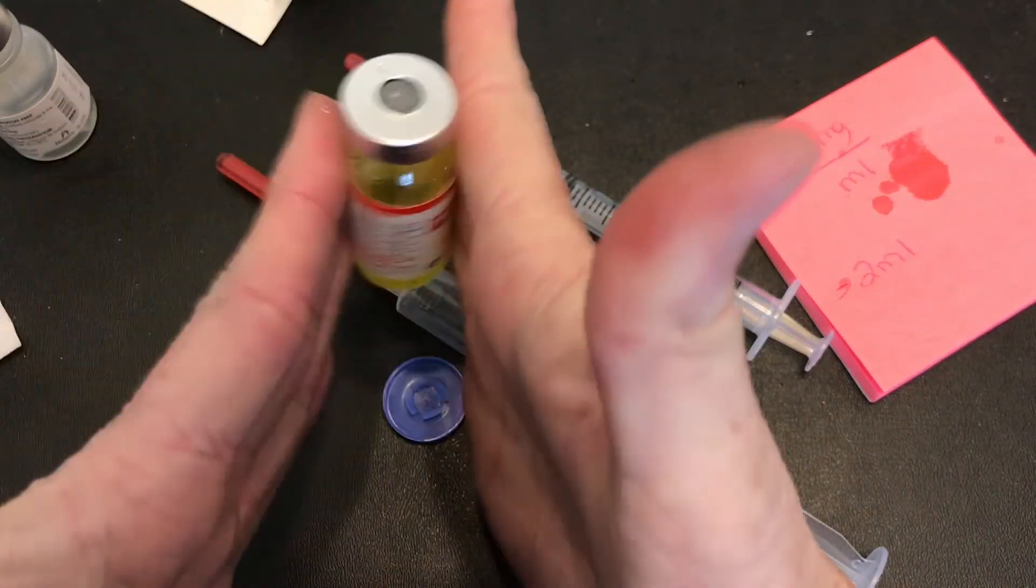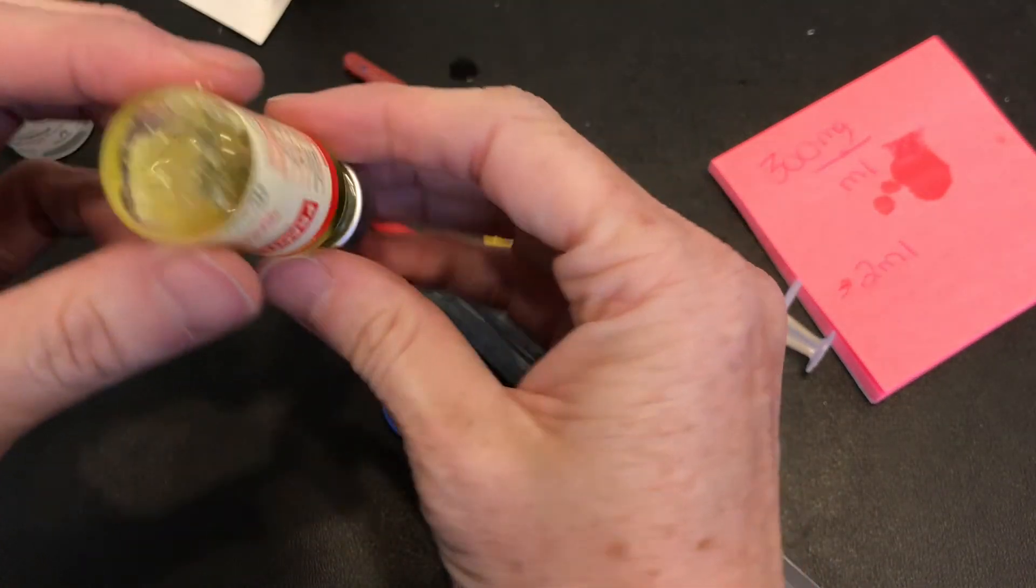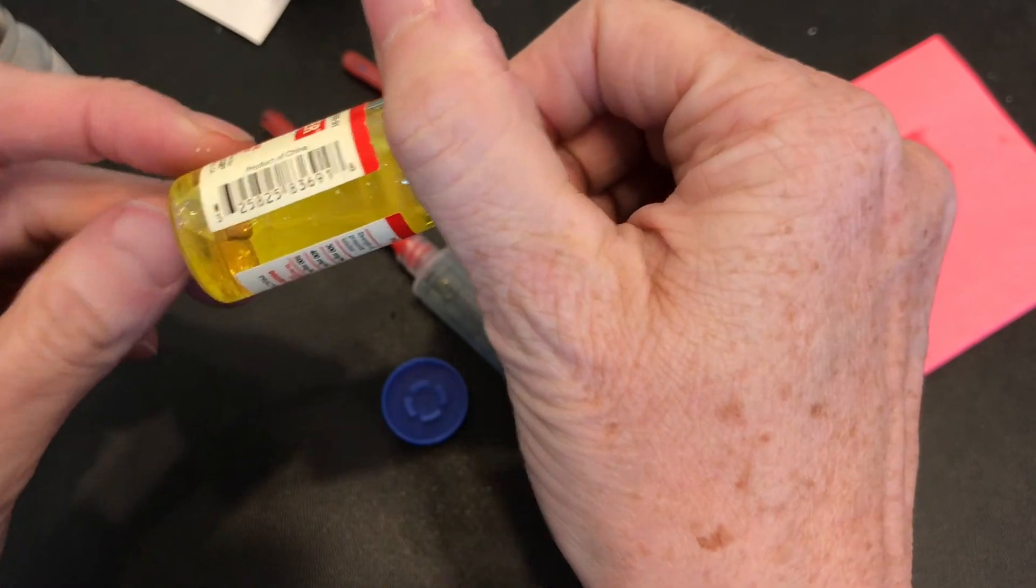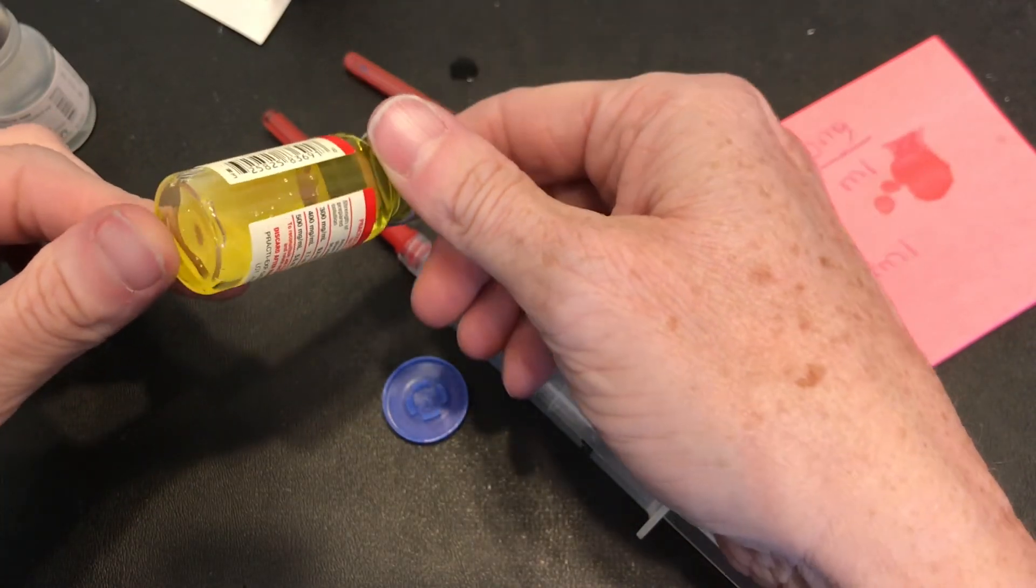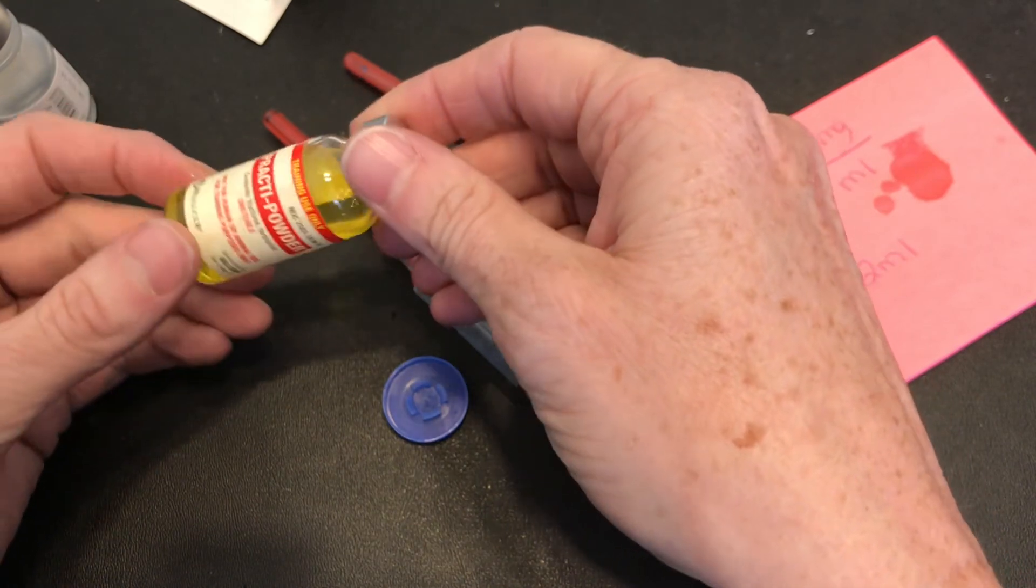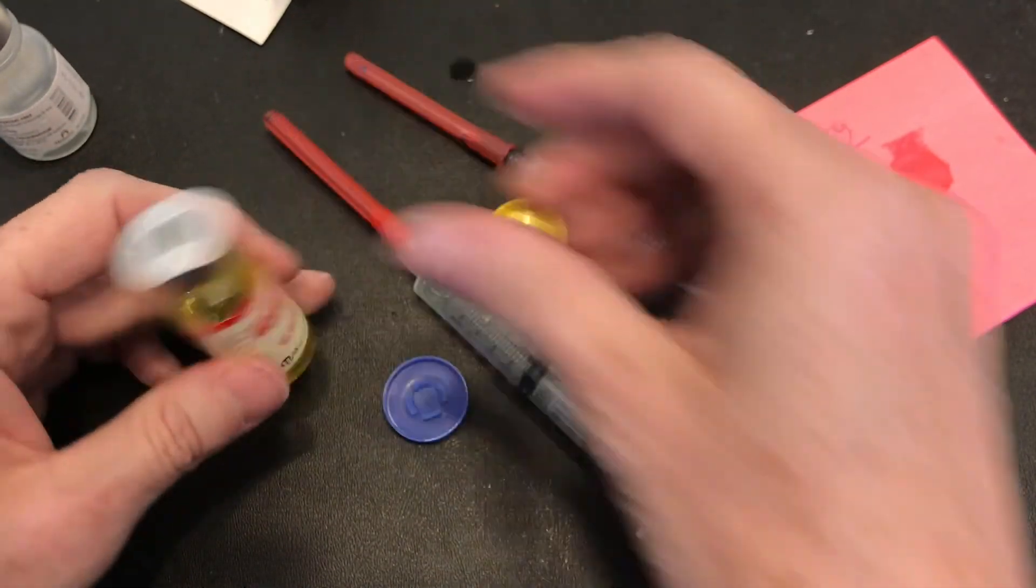Now it's important that when you're mixing this you just roll it in your hands gently. Then we inspect to see if it's all mixed. Once you inspect that there is no more particle we can go ahead and draw up the required dose. So remember now have 300 milligrams per ml and there's 10 mls in this vial.